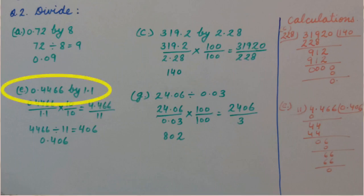Part E: 0.4466 by 1.1. First, we will remove the decimal from the divisor by multiplying by 10 and 10. So we get 4.466 upon 11.